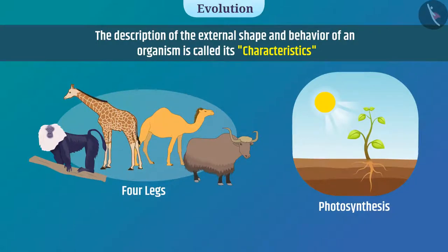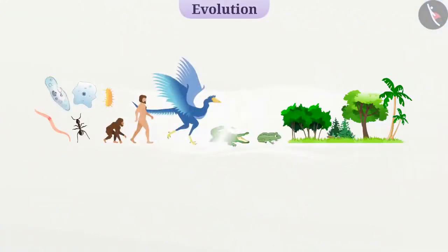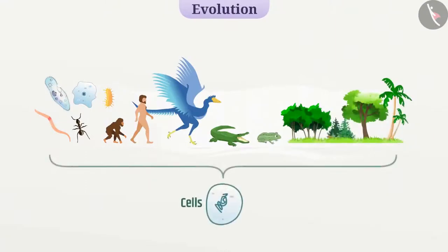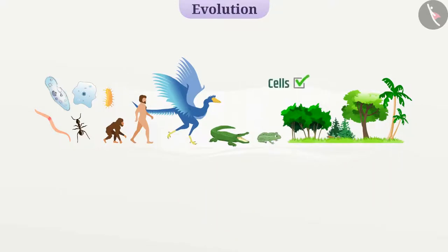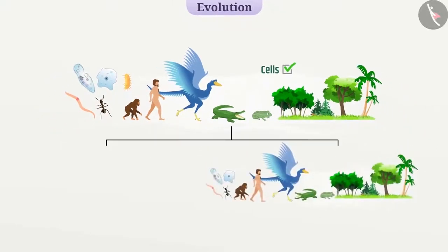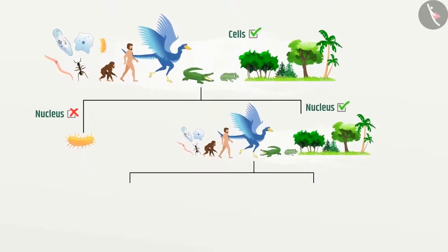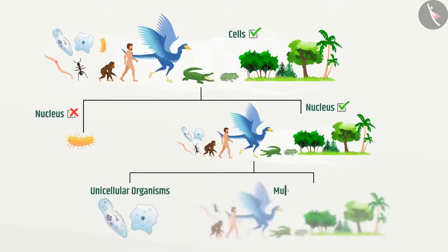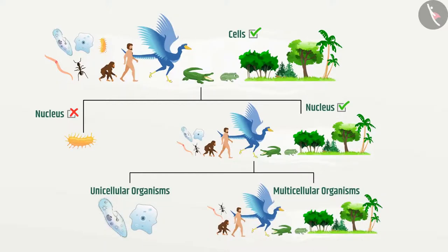For example, the body of all organisms is made up of cells, so we can put all organisms on the first level. At the next level, we will see characteristics that are common among most organisms but not all. For example, most organisms have a nucleus in their cells, but bacteria do not have a distinct nucleus. Then we classify those organisms which have a nucleus into unicellular organisms and multicellular organisms.